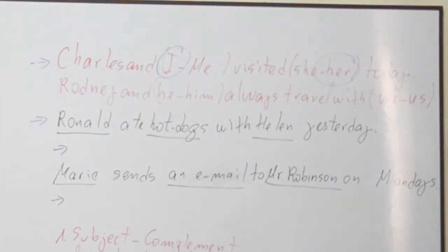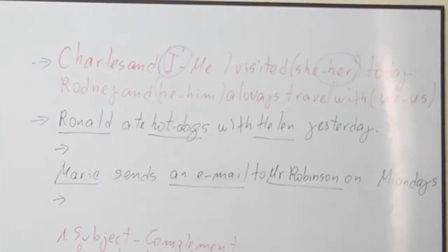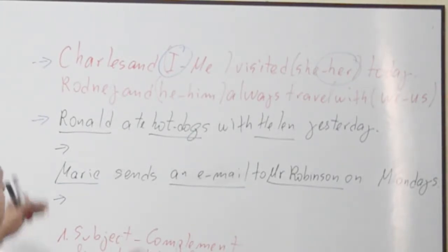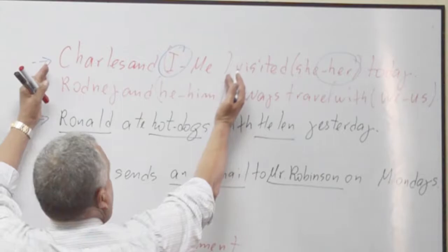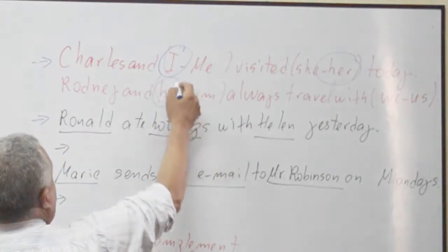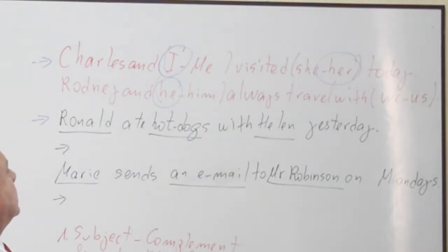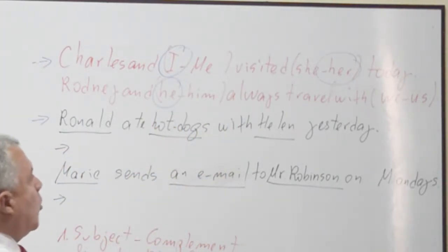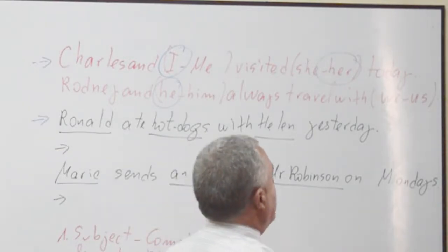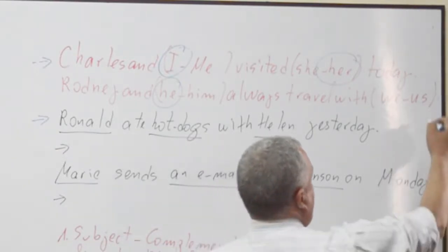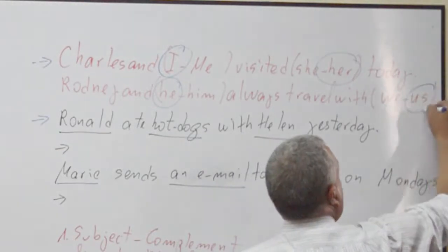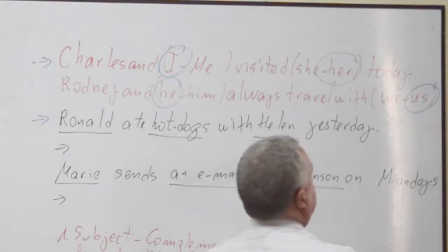Number two: Rodney and he or him always travel with we or us. In the subject, we use subject pronouns — so the answer is 'he'. 'Travel with we or us' — in the complement, we use object pronouns — so the answer is 'us'.